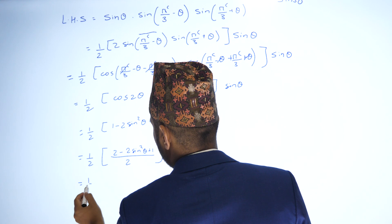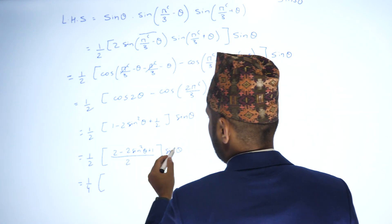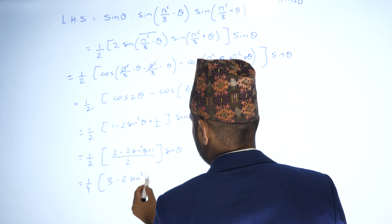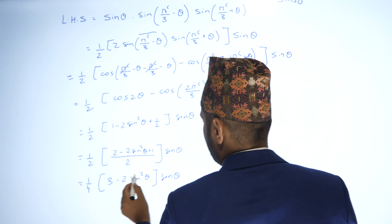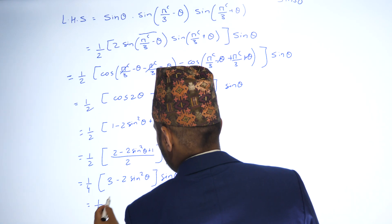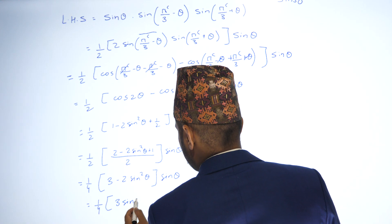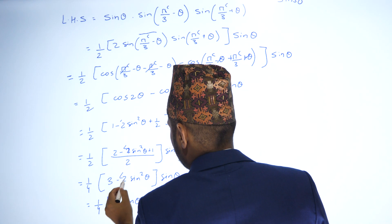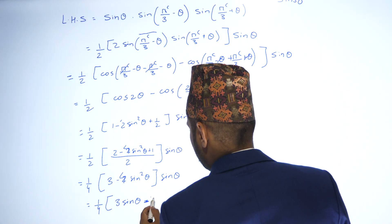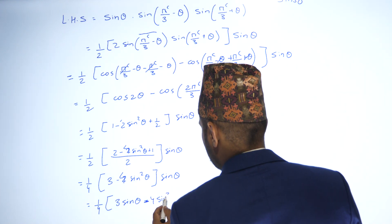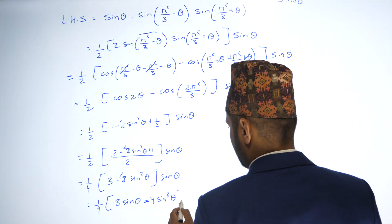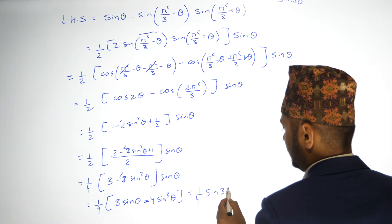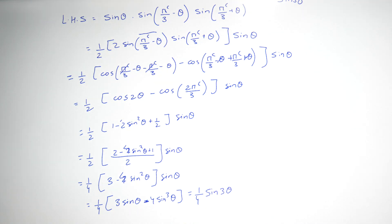So the answer is 1 by 2 times (2 minus 2 sin squared theta) multiplied by sin theta, which gives 1 by 4 times (3 sin theta minus 4 sin cubed theta), and using the triple angle formula, this equals 1 by 4 times sin 3 theta. This is the required result.